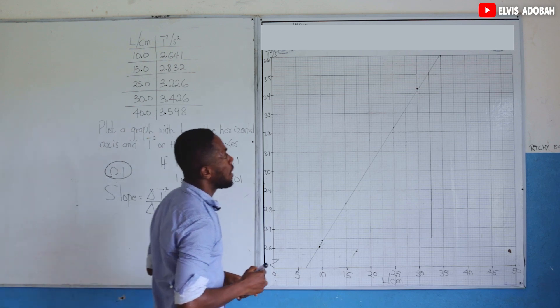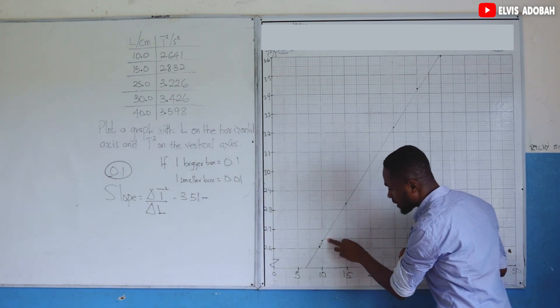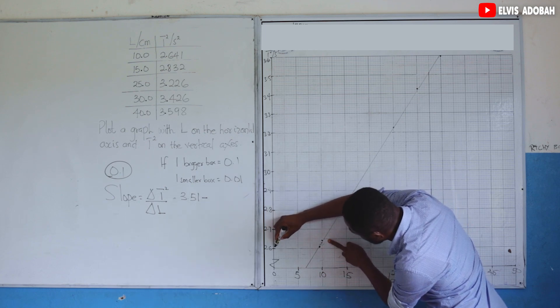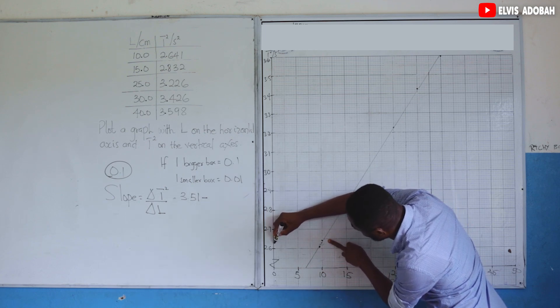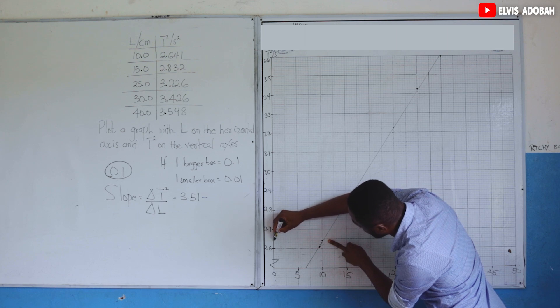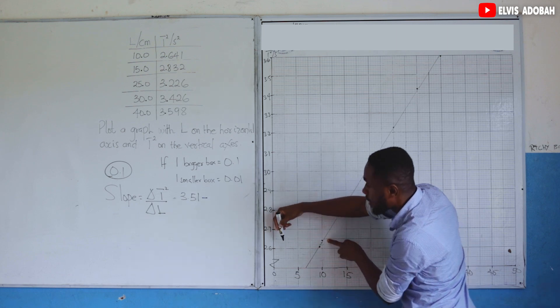Minus this second point. This is 2.6, 2.61, 2.62, 2.63, 2.64, 2.65.